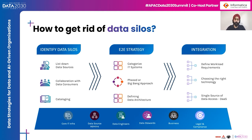Second is building an end-to-end strategy — working closely with several teams to come up with a strategy and architecture that can serve data consumers with various requirements and also enable applications to use the data. Finally, we have data integration, where we get data from sources onto our platform and provide services to data consumers. We'll discuss these processes with the following roles: core IT infrastructure team, data source admins, data engineers, data stewards, business, and legal and compliance.